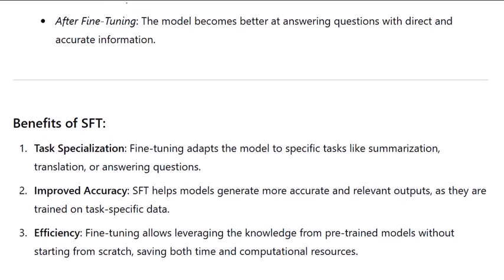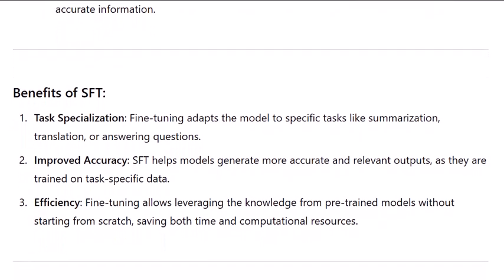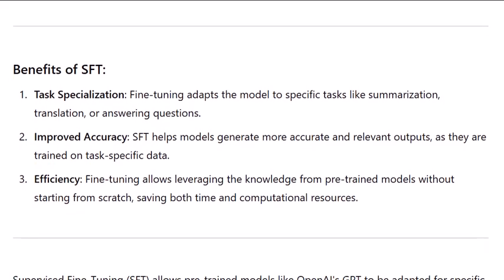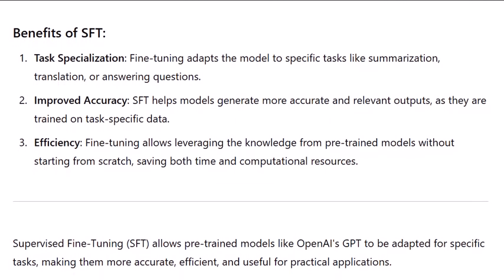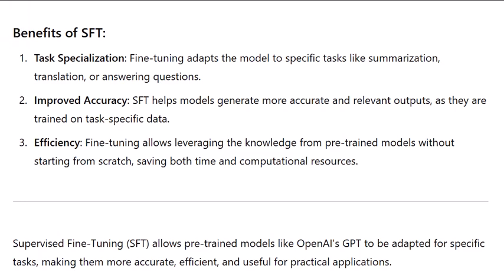Benefits of SFT: first, task specialization — fine-tuning adapts the model to specific tasks like summarization, translation, or answering questions. Second, improved accuracy — SFT helps models generate more accurate and relevant outputs as they are trained on task-specific data. Third, efficiency — fine-tuning allows leveraging the knowledge from pre-trained models without starting from scratch, saving both time and computational resources. Fourth, supervised fine-tuning allows pre-trained models like OpenAI's GPT to be adapted for specific tasks, making them more accurate, efficient, and useful for practical applications.